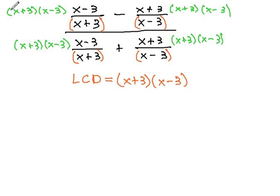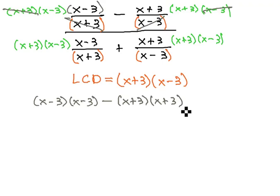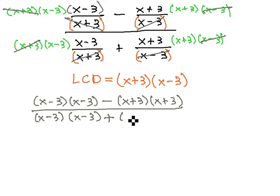And then we can do some reducing. The (x+3)'s divide out, and I'm left with (x-3)(x-3), minus the (x-3)'s divide out and we get (x+3)(x+3), all over the (x+3)'s divide out and we get (x-3)(x-3), plus the (x-3)'s divide out and we get (x+3)(x+3).